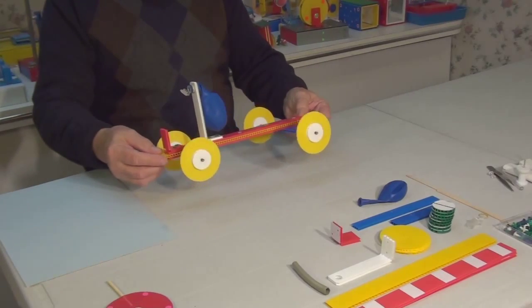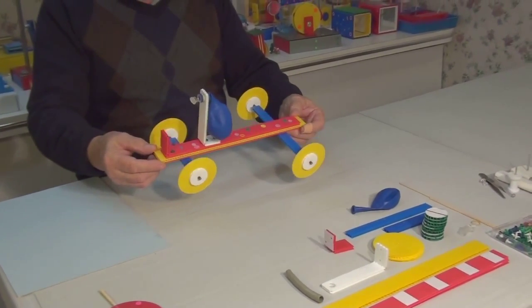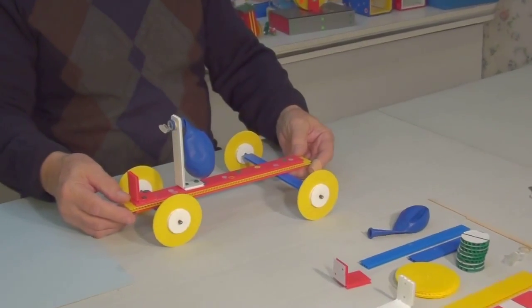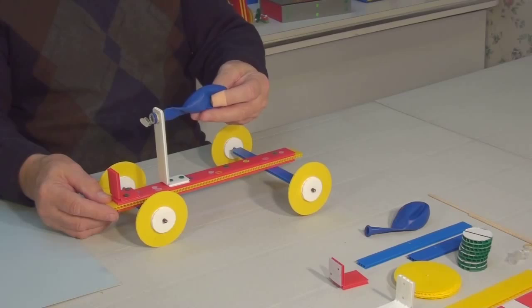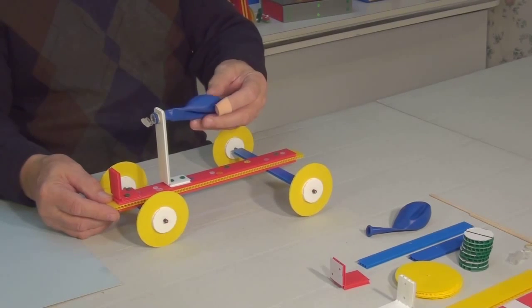This is a balloon car. It demonstrates jet propulsion. The engine here is the elastic rubber of the inflated balloon. The propeller is the blowing air from the deflating balloon.